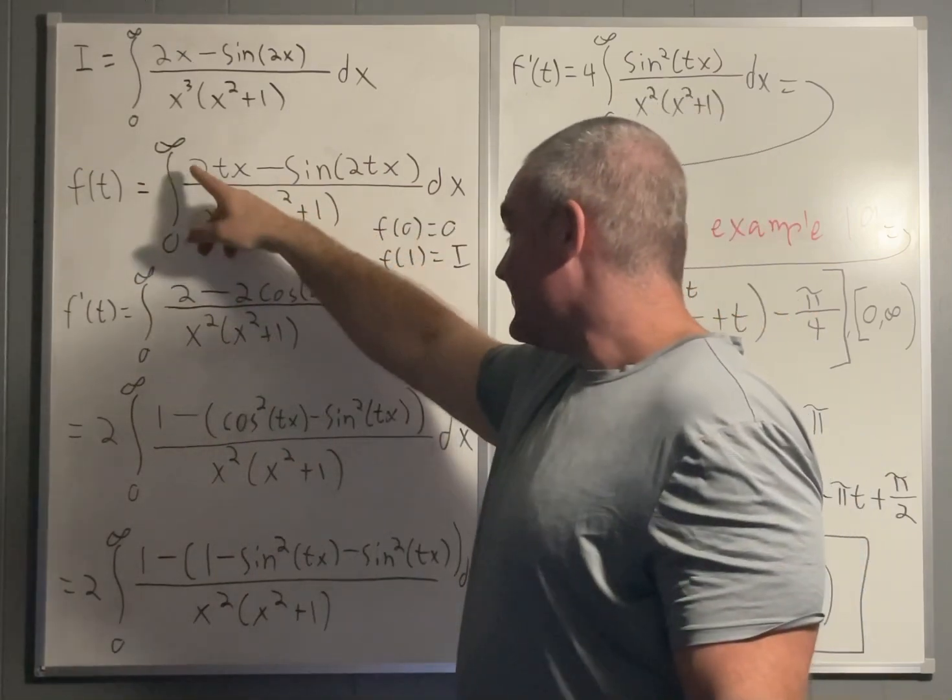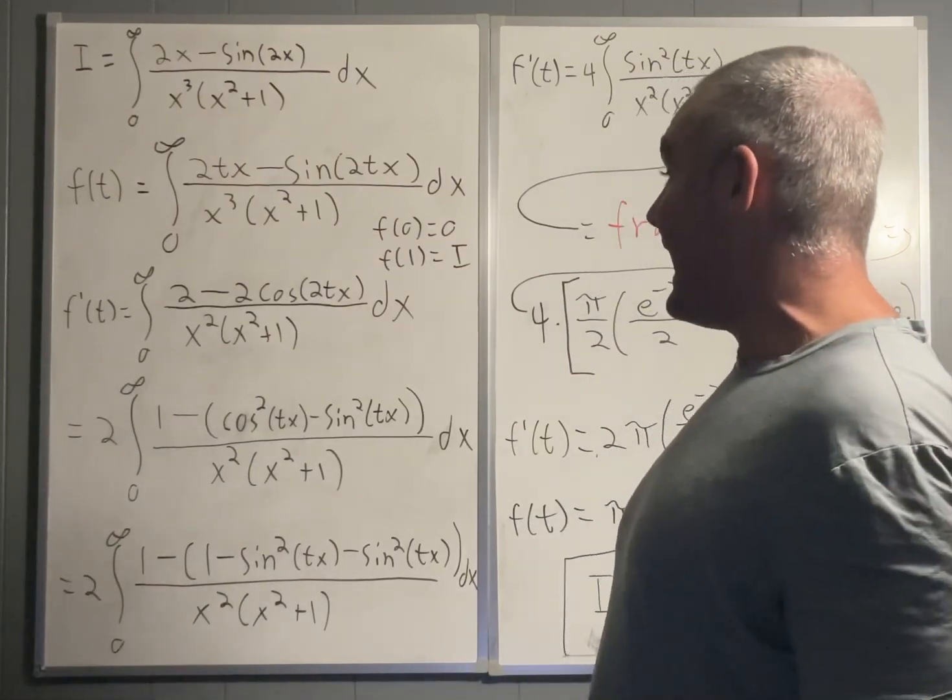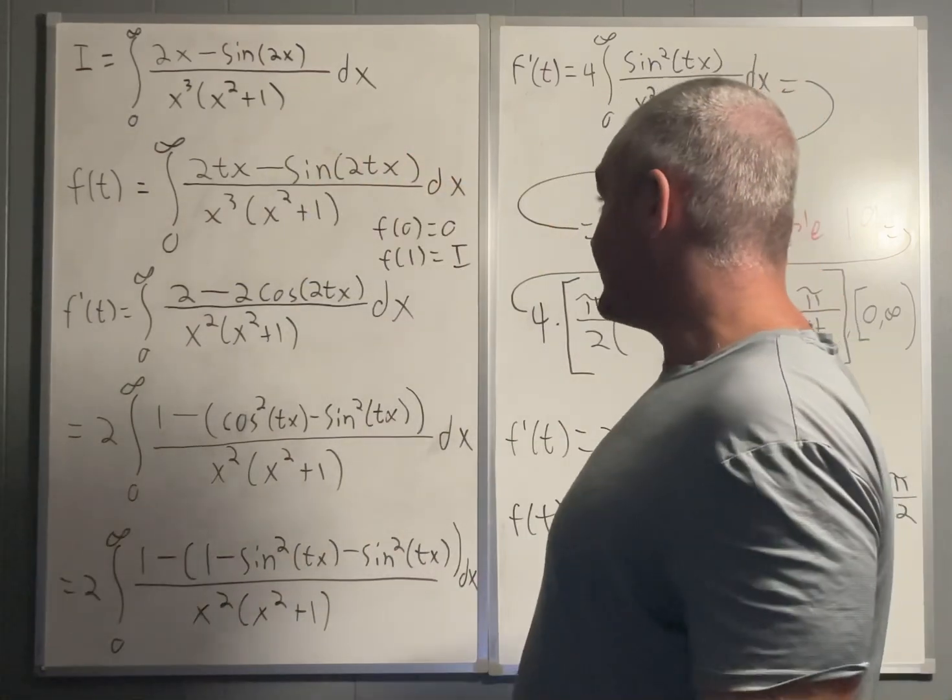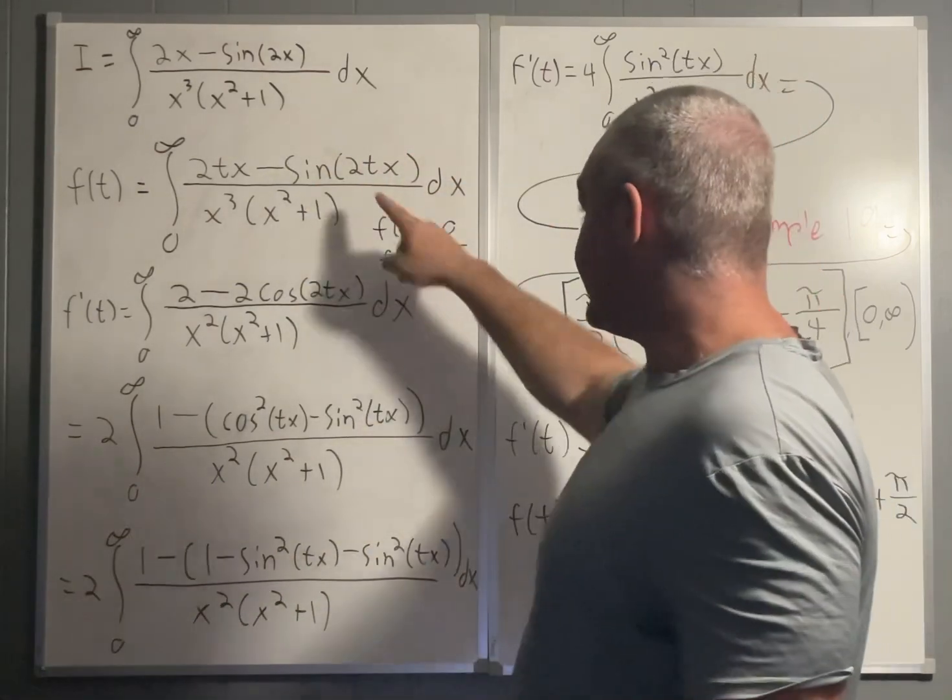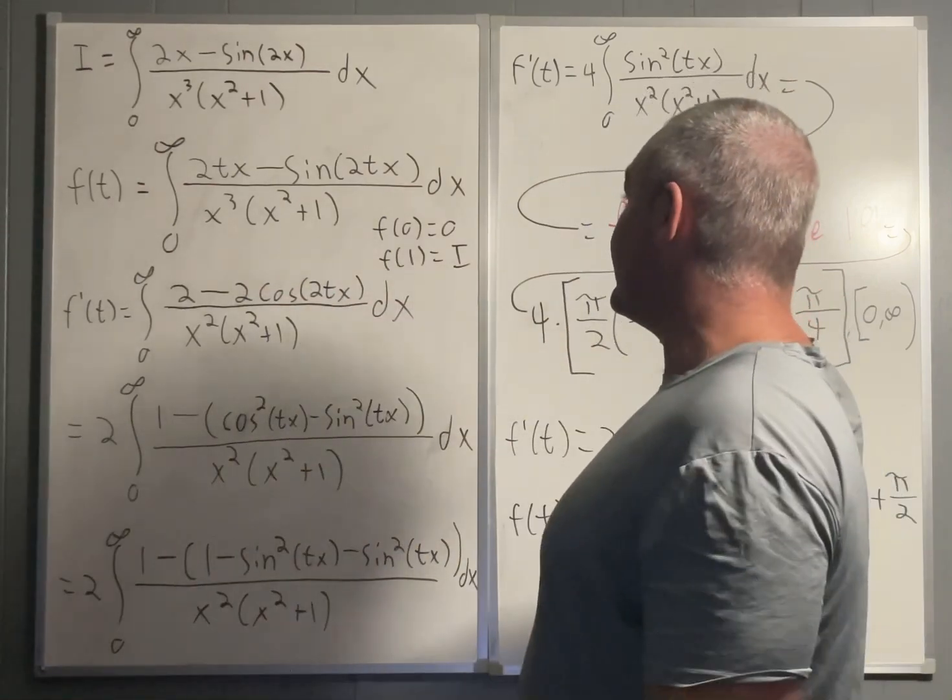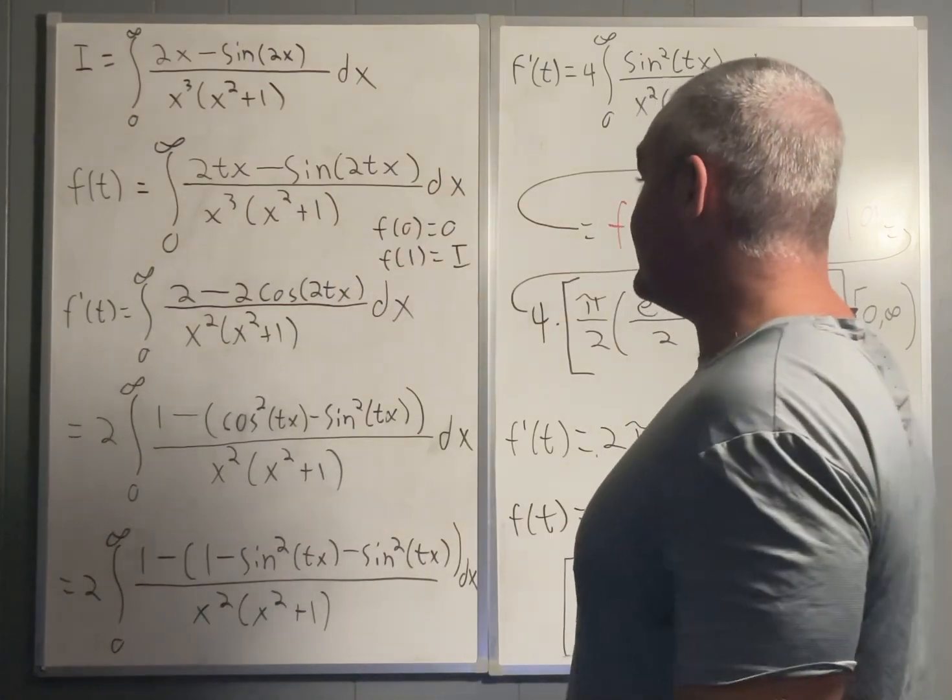And the derivative with respect to t of this would be, using the chain rule, would be cosine of 2tx, which you have right there, times the partial derivative with respect to t of the inside function, which would simply be 2x.